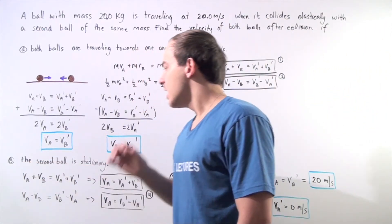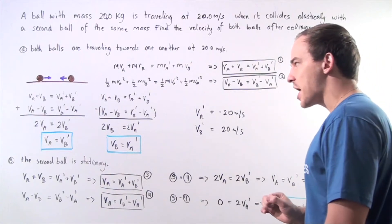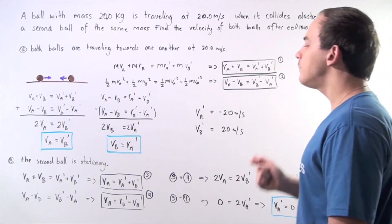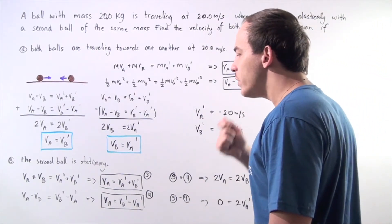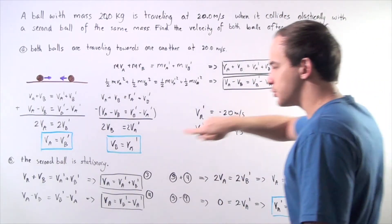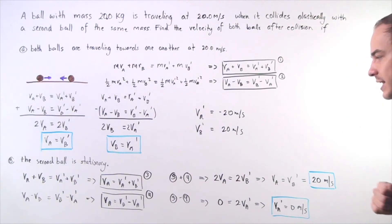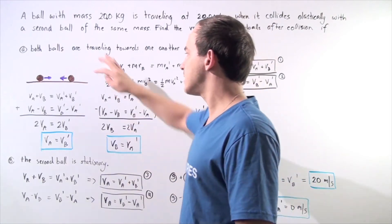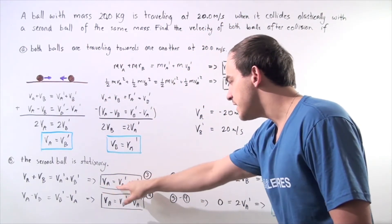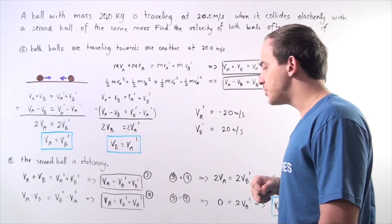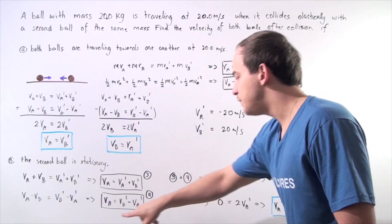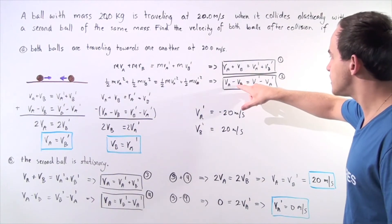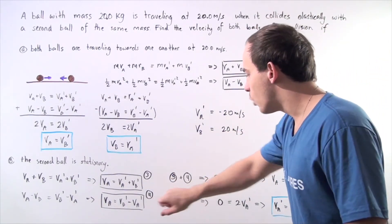Now let's go to Part B. The second ball is stationary and ball A is traveling in the positive direction at 20 meters per second. We use the same equations for elastic collisions, but now V-B equals zero. This gives us equation three: V-A equals V-A prime plus V-B prime, and equation four: V-A equals V-B prime minus V-A prime.